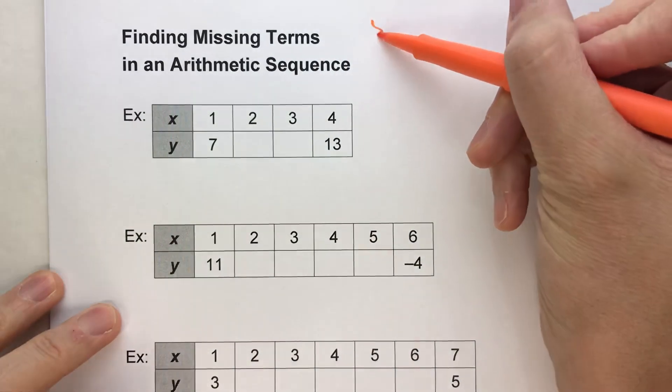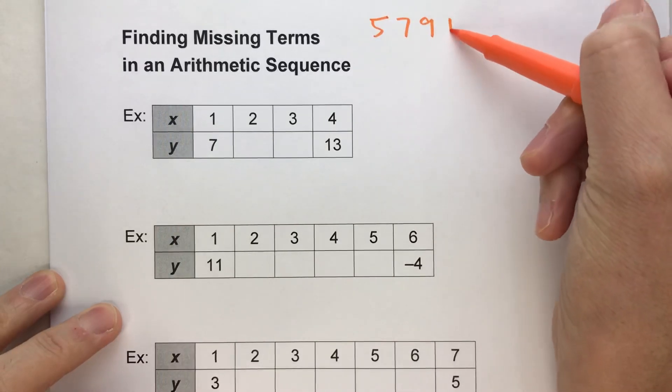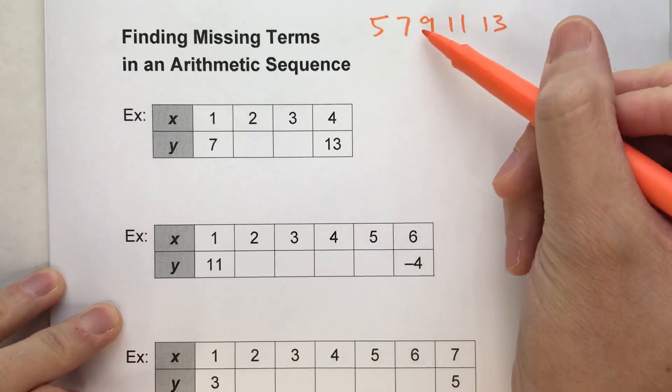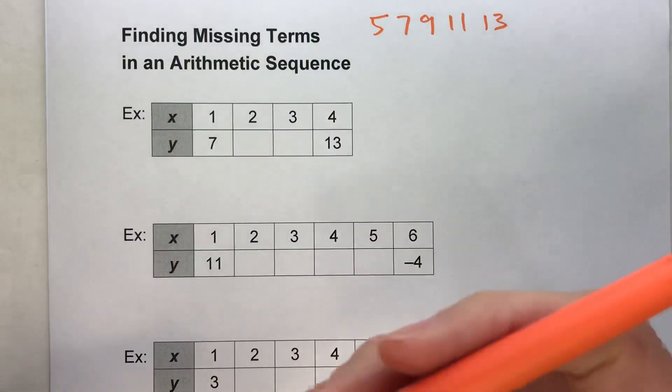For example, if I gave you 5, 7, 9, 11, 13, this is arithmetic because we're repeatedly adding 2 to get the next number in the sequence.